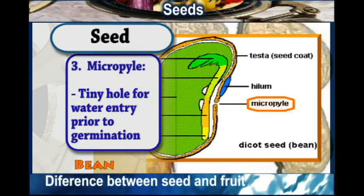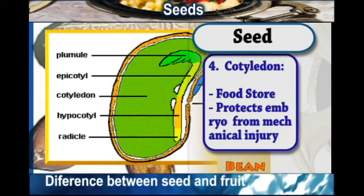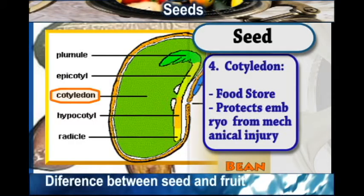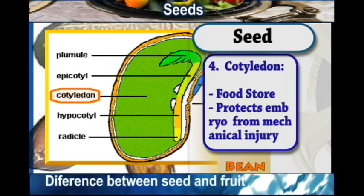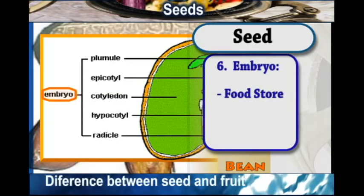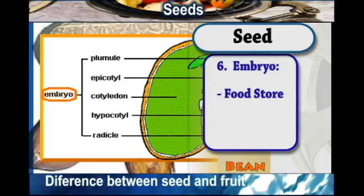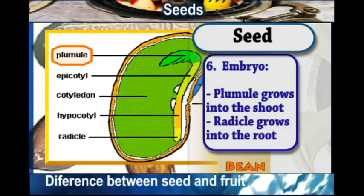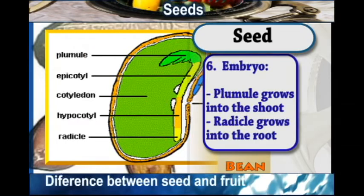We also looked at the cotyledon, which is a food store that also protects the embryo from mechanical injury; the endosperm, which is also a food store; and the embryo, which develops into the plumule and also has the radicle that grows into the roots.